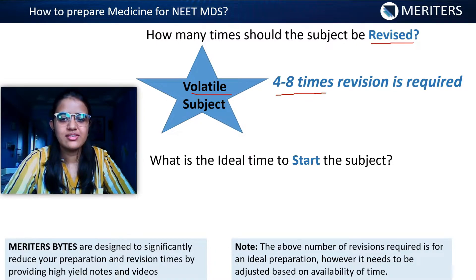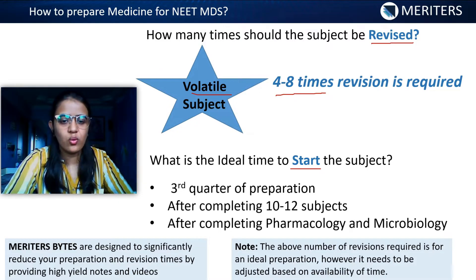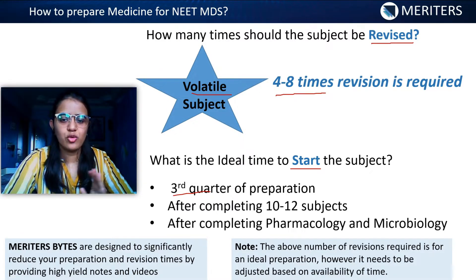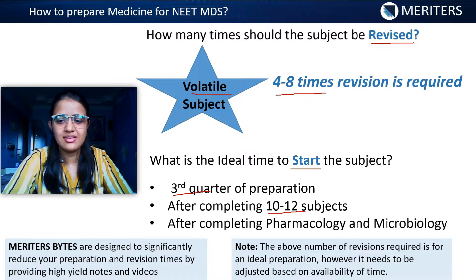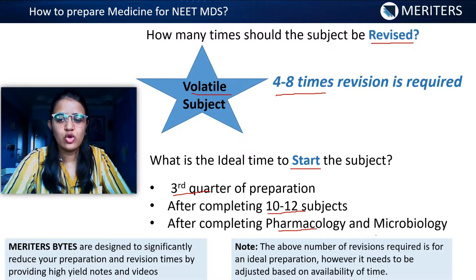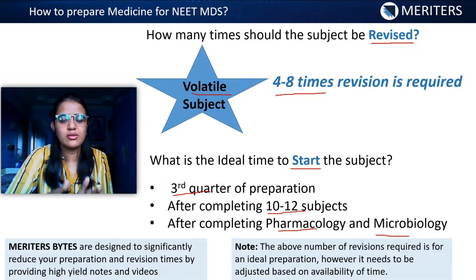What is the ideal time to start the subject? If you divide your preparation into 4 halves, the third quarter can be given to general medicine — that is approximately after completing 10 to 12 subjects. It is advised that you study medicine after completing your pharmacology and microbiology, because these two subjects will have a lot of correlation with your general medicine. Once you are done with those two subjects, you can start general medicine.